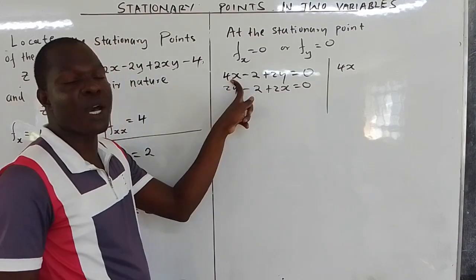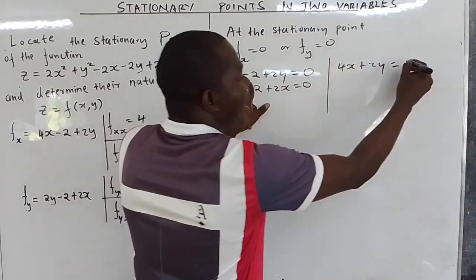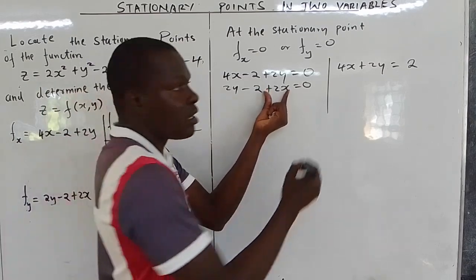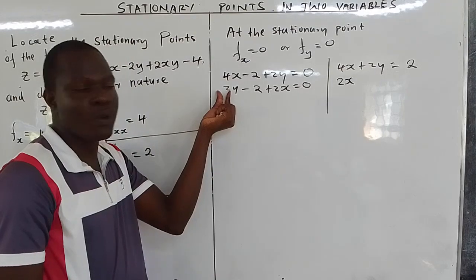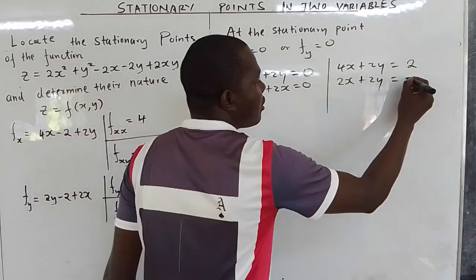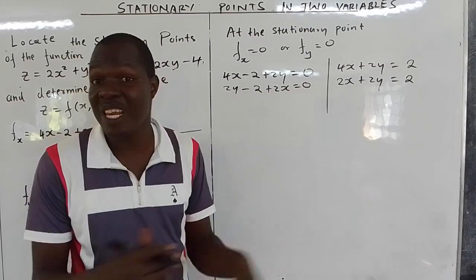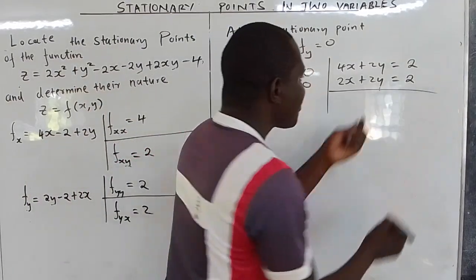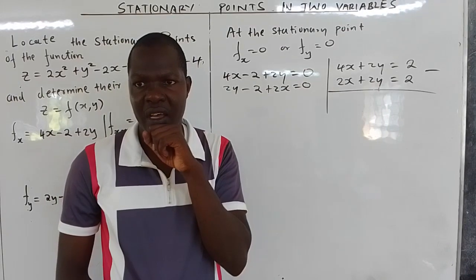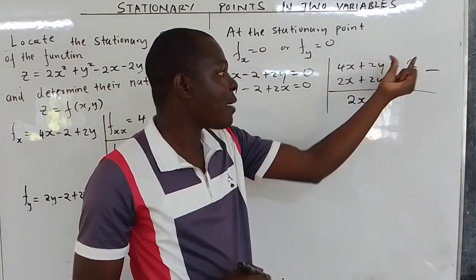We now write them as a system of linear equations. From the first equation: 4x plus 2y equals 2. From the second equation: 2x plus 2y equals 2. We can use elimination since both equations contain 2y. Subtracting: 4x minus 2x gives 2x, and 2y minus 2y gives 0, and 2 minus 2 gives 0. So 2x equals 0, meaning x equals 0.